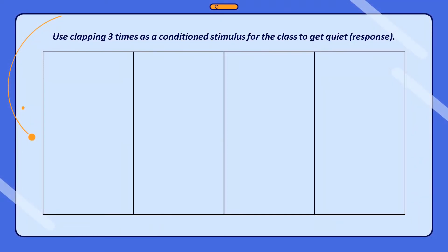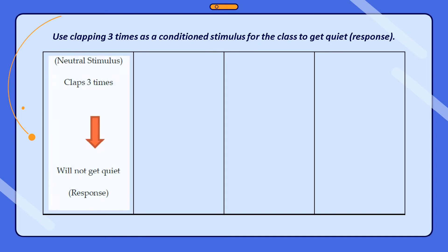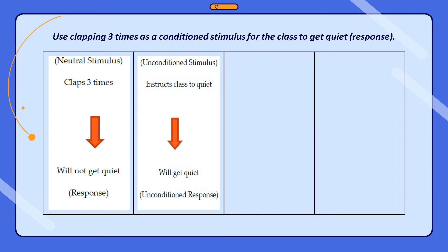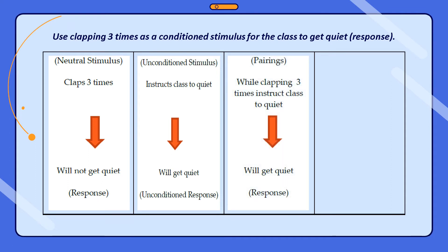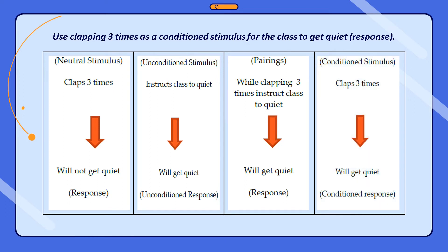For another example: using clapping three times as a conditioned stimulus for the class to get quiet as a response. As a neutral stimulus, clapping three times alone will not get the class quiet. Next, instructing the class to get quiet is the unconditioned stimulus, and the class getting quiet is the unconditioned response. By pairing both — clapping three times while instructing the class to quiet down — the class responds. Therefore, as the conditioned stimulus, clapping three times will automatically get the class to quiet down.